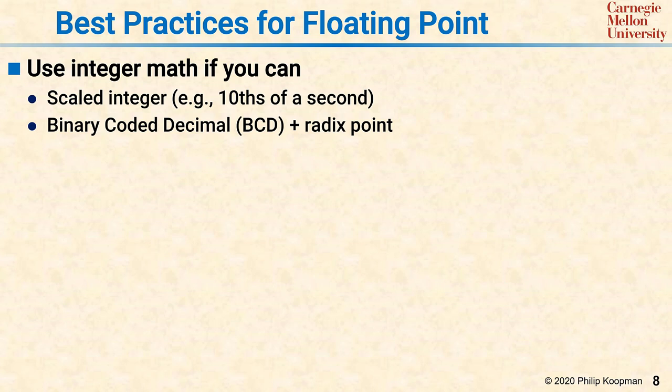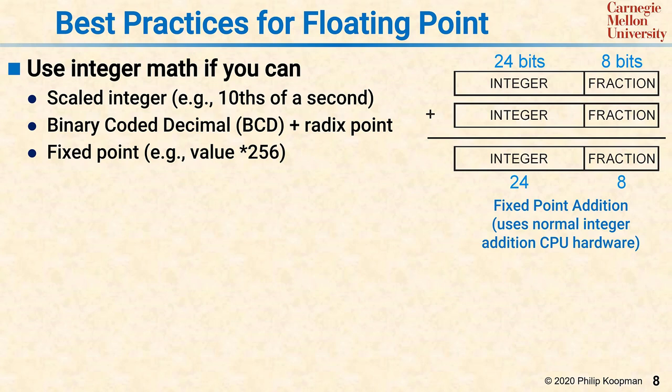A third technique is to use fixed point, which is quite common in embedded systems. In fixed point, you take an integer and you interpret it as a scaled integer, but with even powers of two of scaling. One example is a 32-bit value, which is considered to be 24 bits of integer and 8 bits of fraction. You can add these up using normal integer math and get a correct answer. Multiply and divide also use integer instructions, but you have to move the radix point around after you're done, just like you learned in grade school.